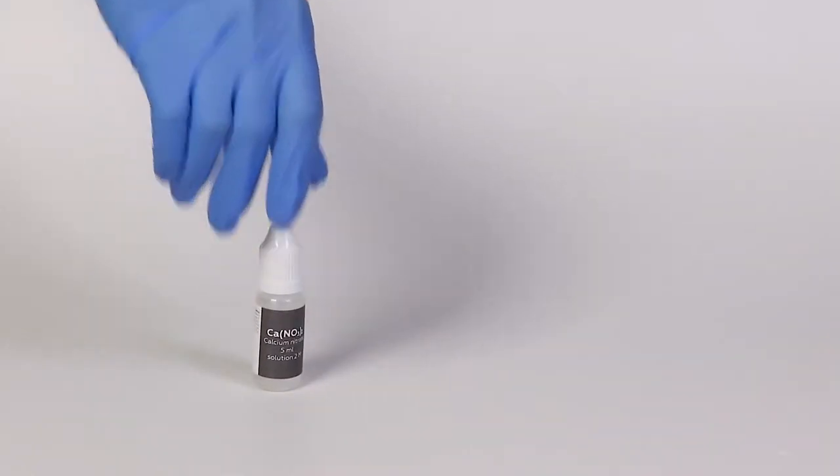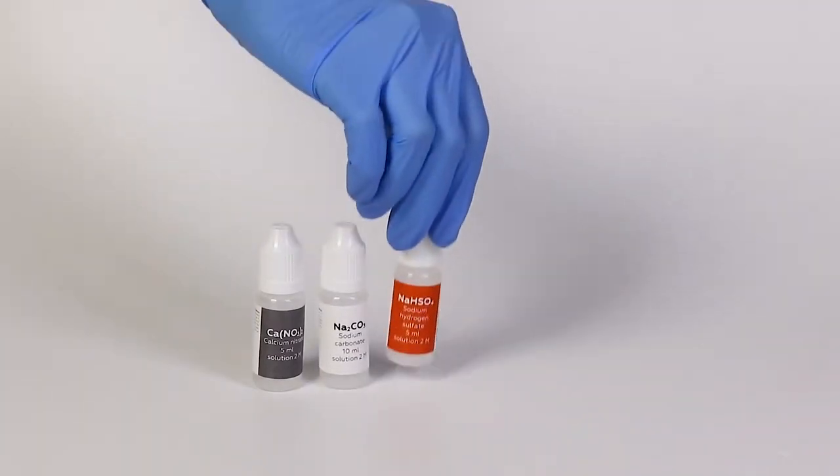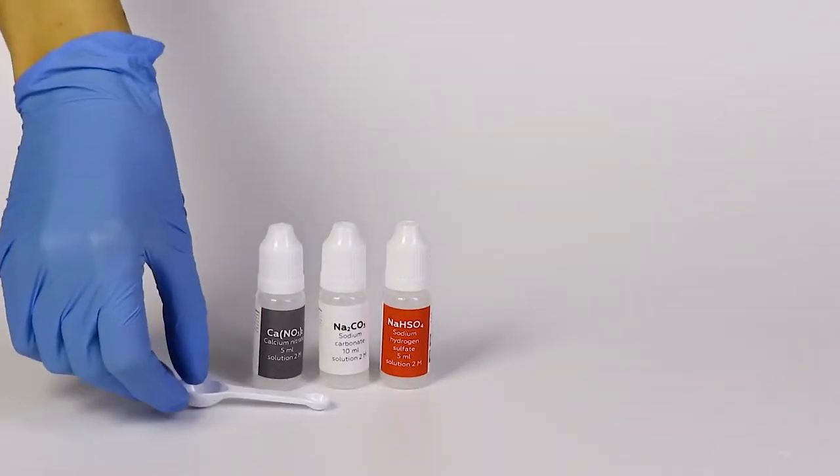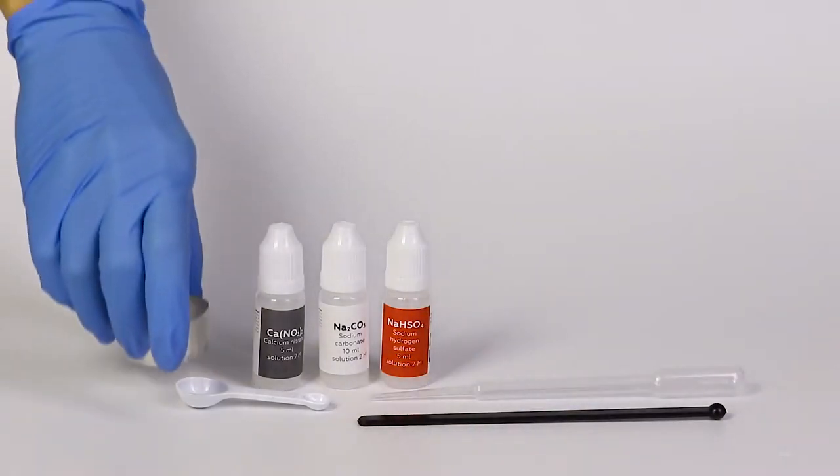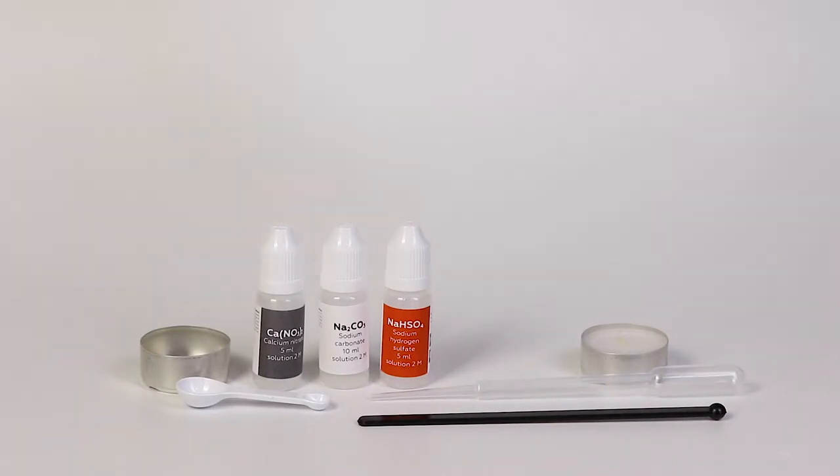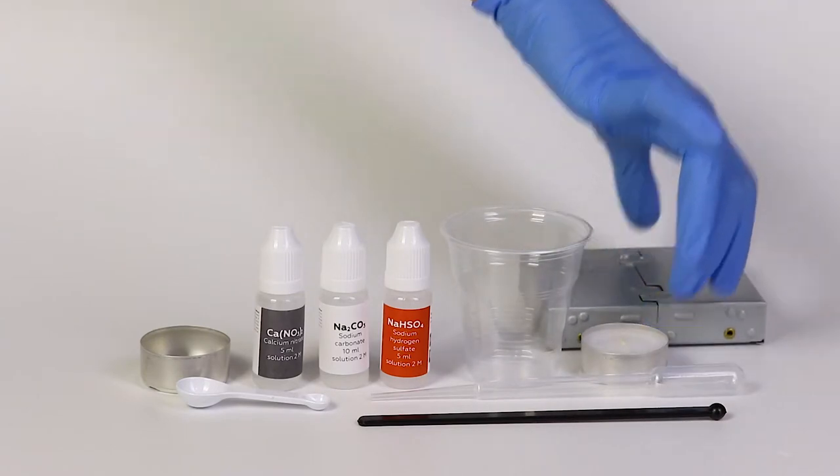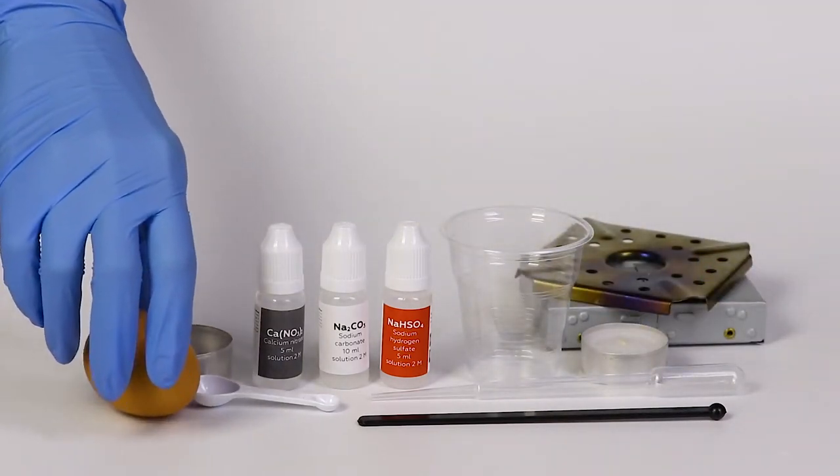For the yolk from white experiment, you will need three solutions: calcium nitrate, sodium carbonate, and sodium hydrogen sulfate. You will also need a measuring spoon, the Pasteur pipette, a plastic stirring rod, a mold, and a candle. From the starter kit, you will need a disposable cup, the solid fuel stove, and the flame diffuser. You will also need an egg and matches or a lighter.